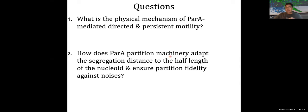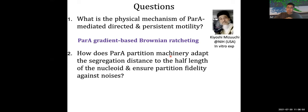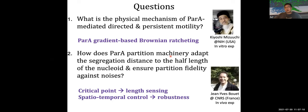To address these questions, we combine theory with experiment. In collaboration with in vitro experimental testing by Kiyoshi Mizuki, we proved that the ParA partition machinery works as a ParA concentration gradient-based Brownian ratchet that drives directed motility. For the second question, in collaboration with in vivo experiments by Zhang Yi, we showed that the ParA partition works near a critical point in parameter space that adapts the segregation distance to half of the nucleoid length, and the plasmid itself localizes ParA to ensure partition fidelity.